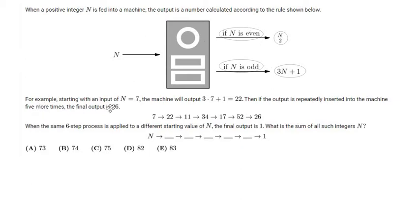For example, starting with an input of n equals 7, the machine will output 3 times 7 plus 1 equals 22. Then, if the output is repeatedly inserted into the machine 5 more times, the final output is 26, like this.